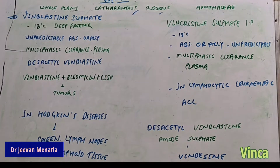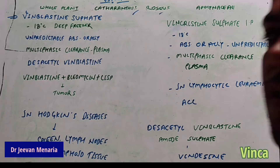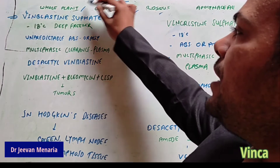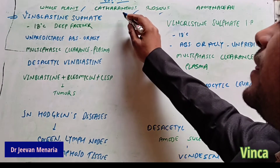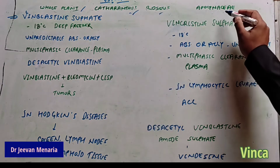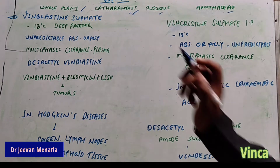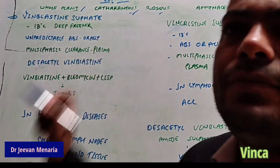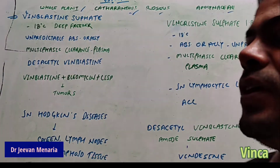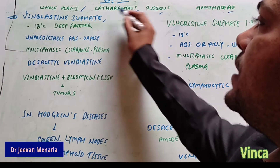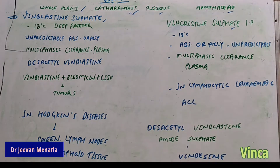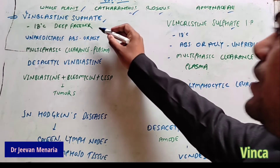We continue with Vinca. Vincristine is obtained from the whole dried plant of Catharanthus roseus, belonging to the Apocynaceae family. It contains two major active pharmaceutical ingredients: vinblastine and vincristine. Now, what is the difference between vinblastine and vincristine?